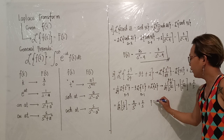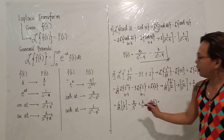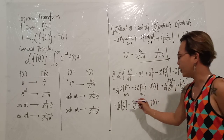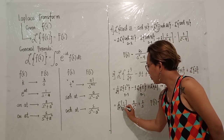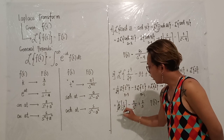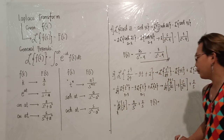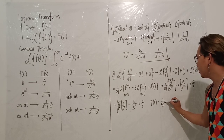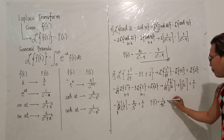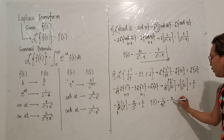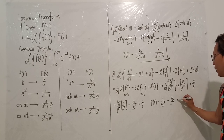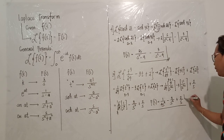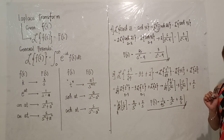To get the final answer, simplify 6 over 24 to 1 over 4. So the final answer is 1 over 4s raised to the 4th, minus 3 over s squared, plus 2 over s.